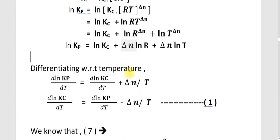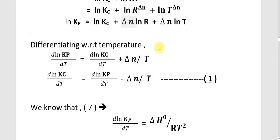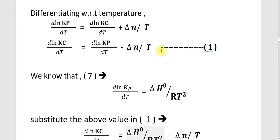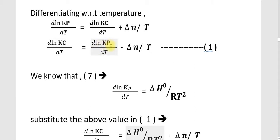This equation is now differentiated with respect to temperature. Differentiating, we get: d(Ln Kp)/dT equals d(Ln Kc)/dT plus delta N by T. Rearranging, d(Ln Kc)/dT is equal to d(Ln Kp)/dT minus delta N by T.